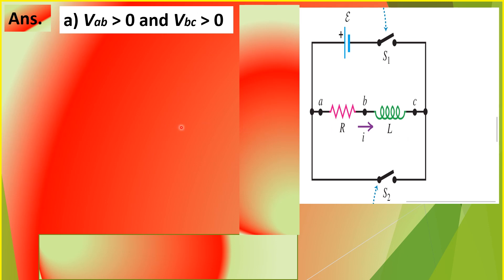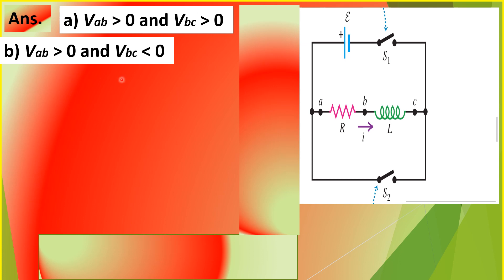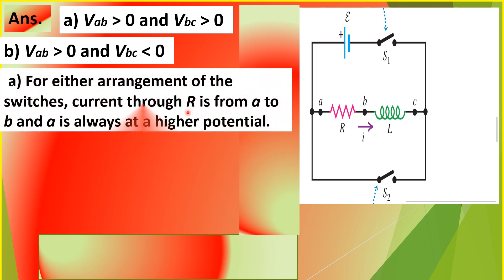For case B, when switch S1 is open and switch S2 is closed, the potential difference across AB or across the resistor is still greater than zero or positive, but the potential difference across points BC or across the inductor is now less than zero or negative. For either arrangement of the switches, current through resistor R is from A to B, meaning A is always at a higher potential.